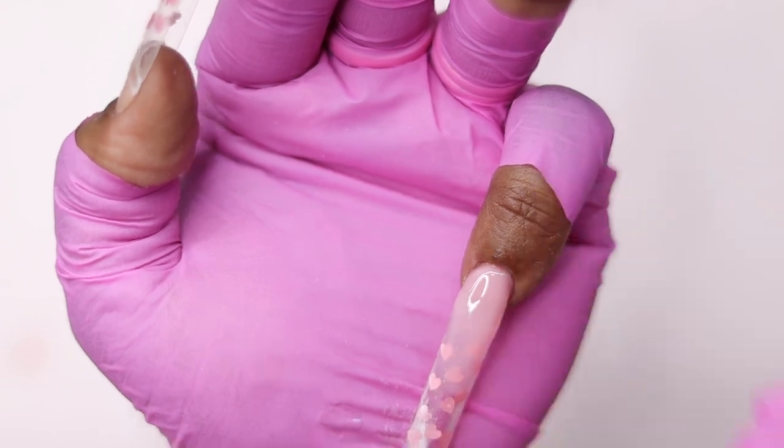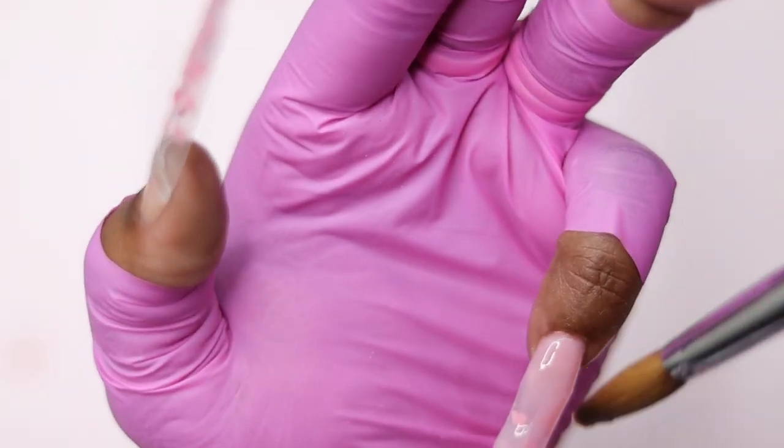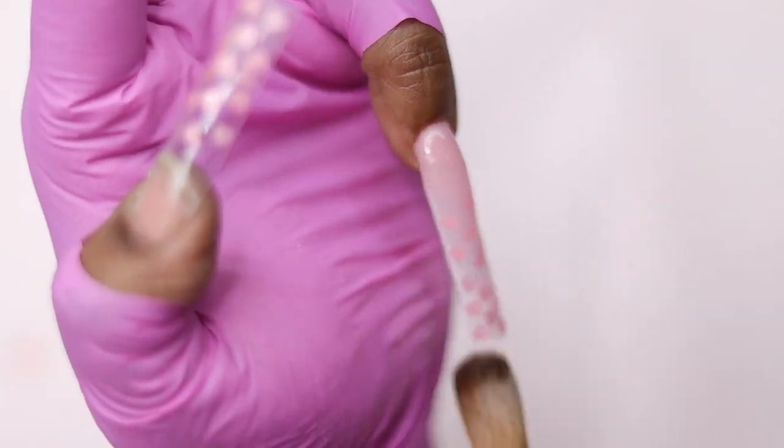Wetter just means that the ratio is going to be a little bit different. So if the ratio is a two-to-one, then you're going to go to a one-to-one, which means the same amount of liquid in the brush and bead size. If it's a two-to-one, that means you need twice as much powder than you do liquid.